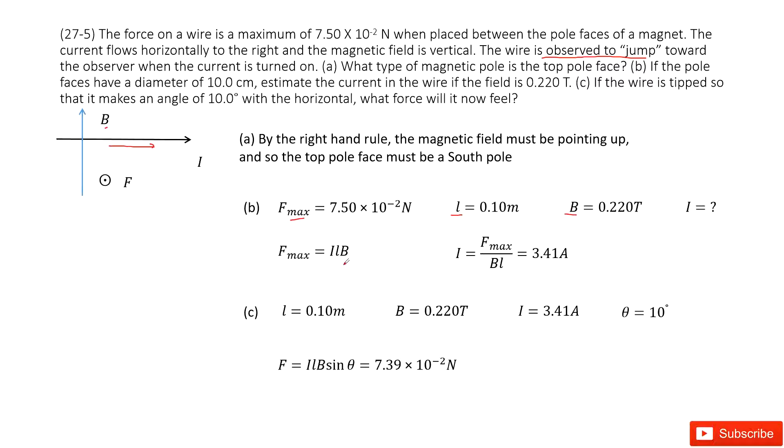We just write down the function for the maximum magnetic force, that is ILB. Then get the function for current. Input given quantities, and you can get the answer.